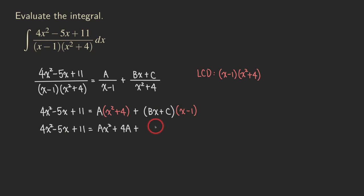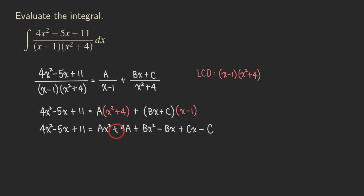And then Bx times x gives Bx squared. And then Bx times negative 1 gives minus Bx, plus Cx, and then minus C. From here we are going to combine like terms — remember x is still the variable. A, B, and C are all unknowns, but x is still the variable for this problem. So we are going to combine like terms by getting all the x squared terms together, the x terms together, and then the constant terms together.